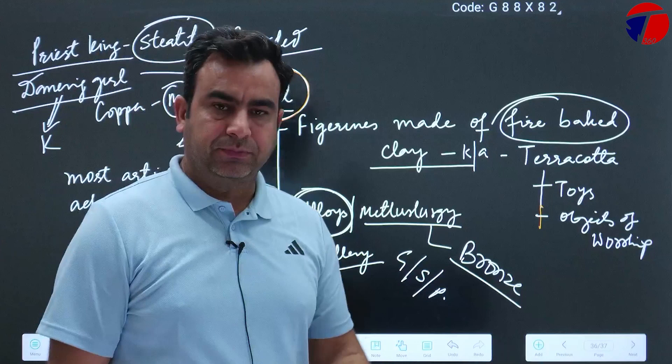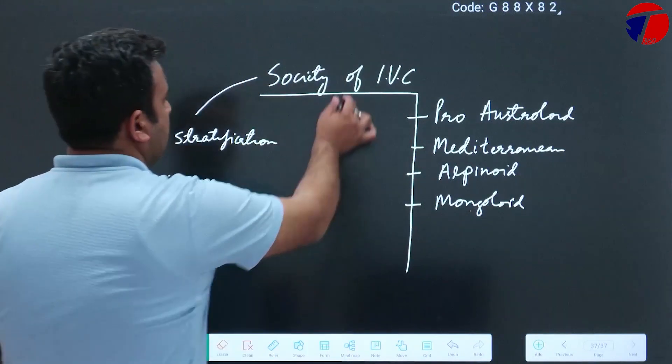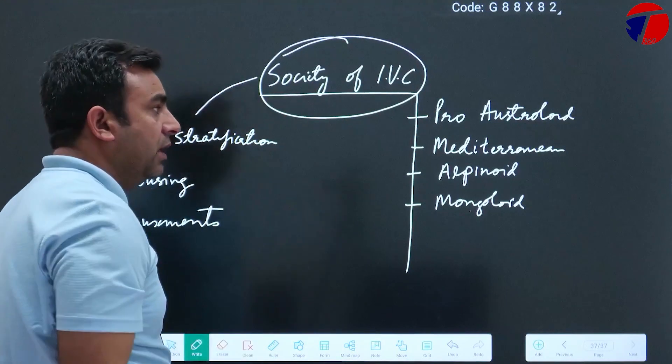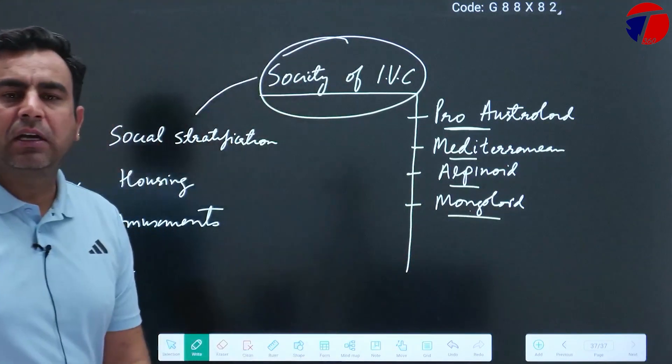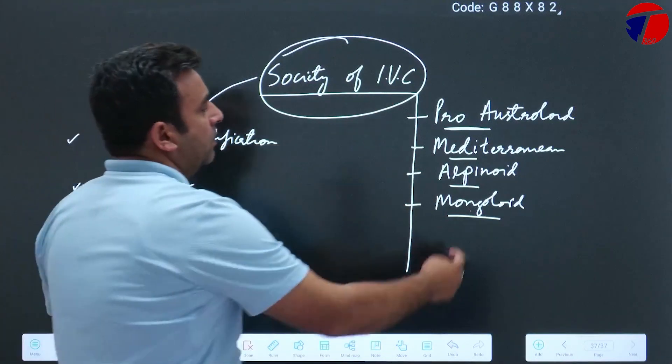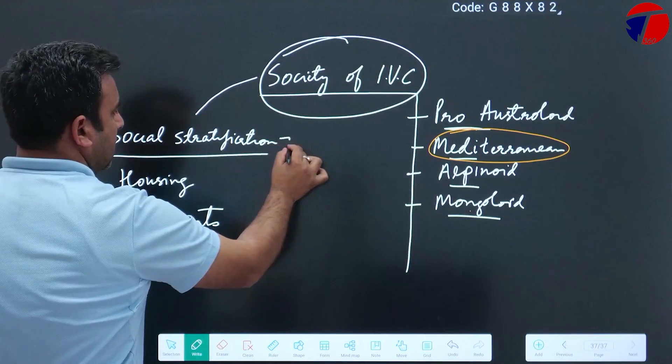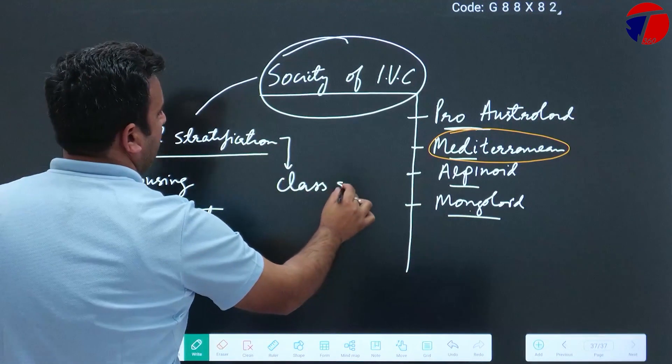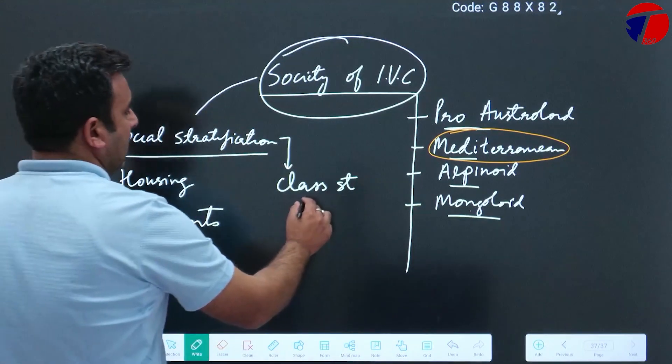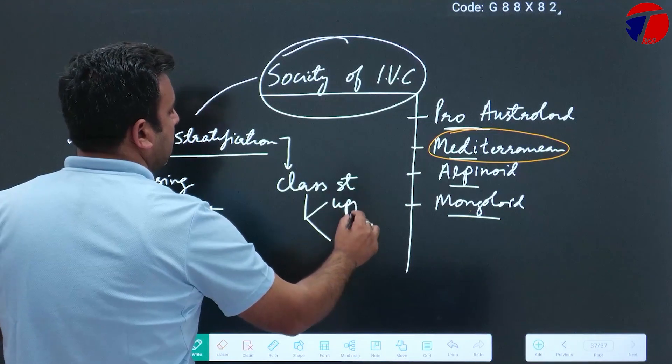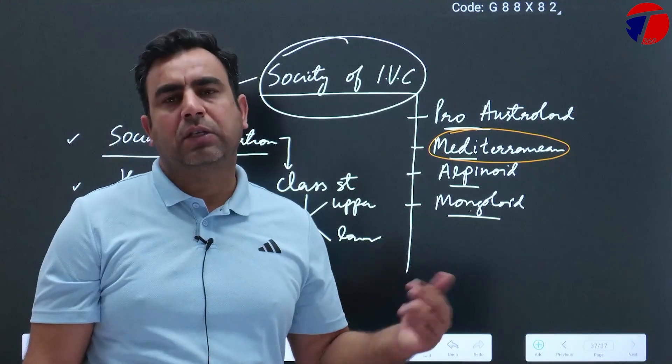The last topic is society of IVC. These prominent races were there: proto-Australoid, Mediterranean, Alpine, and Mongoloid. If the exam question asks which is dominant among these four, the most dominant race was the Mediterranean race in Indus Valley. Social stratification was almost absent, but class stratification was there. The class system in IVC is known from town division - upper citadel and lower town. Some say rich people lived in upper citadel, artisans and commoners lived in lower town. Otherwise, there was no class differentiation, but of course class differentiation was there.